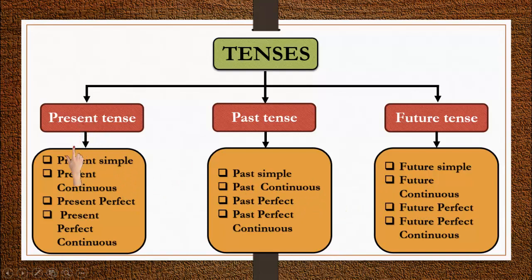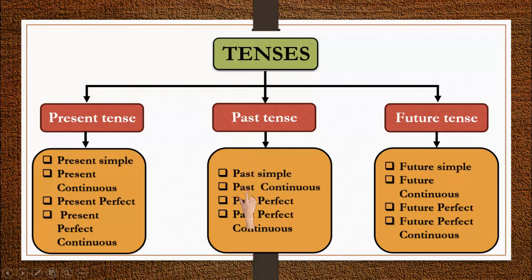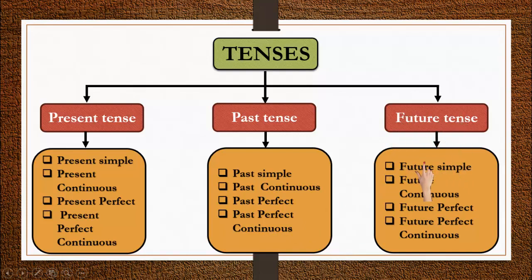The four present tenses are: simple present, present continuous, present perfect, and present perfect continuous. The four past tenses are: simple past, past continuous, past perfect, and past perfect continuous. The four future tenses are: future simple, future continuous, future perfect, and future perfect continuous. So overall there are twelve tenses.